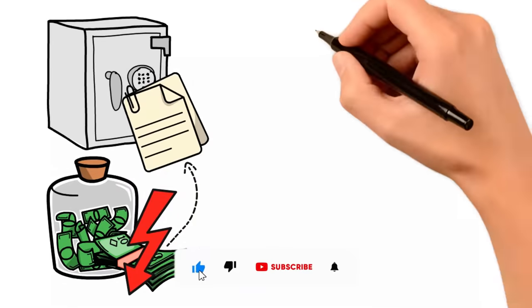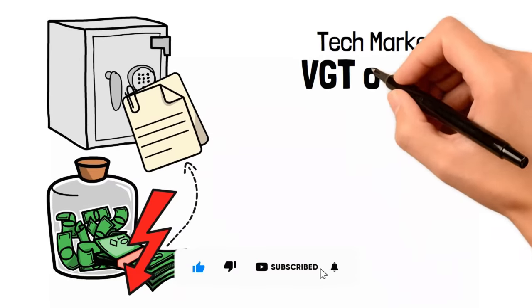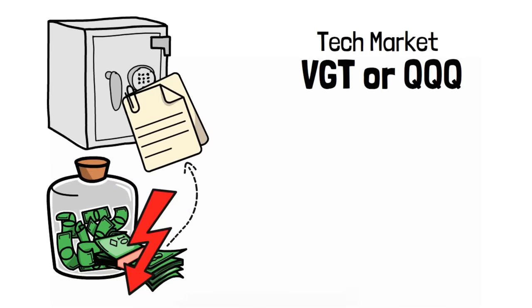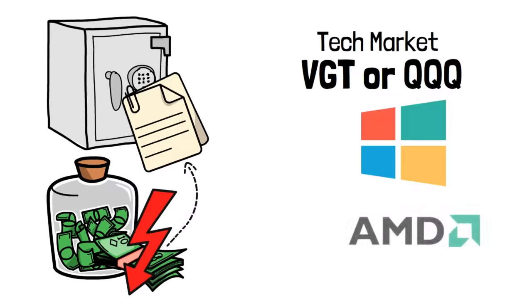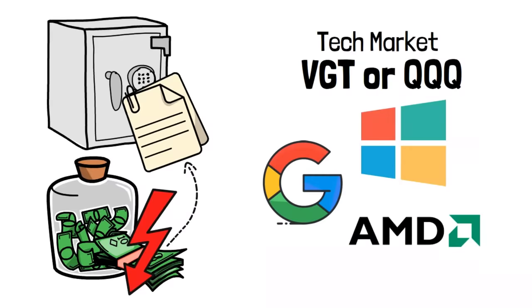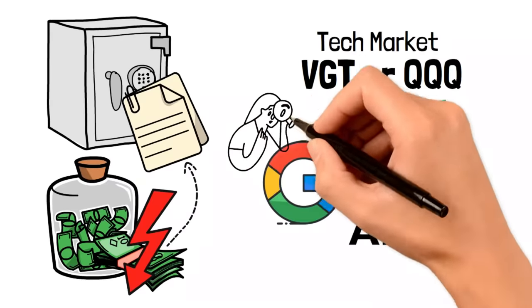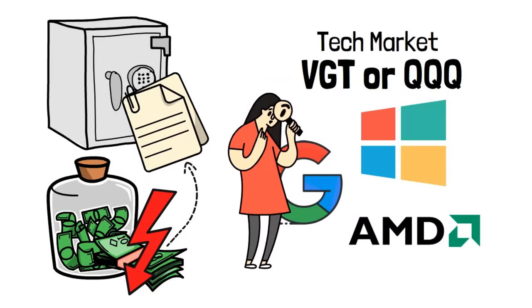If you want to get involved with tech, you can go with VGT or QQQ. These will expose you to companies like Microsoft, AMD, or Google. Both of these funds have different companies, so make sure you do some research to see what you like more.